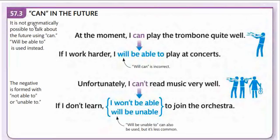The last pointer in today's lesson is 'can' in the future. We have mentioned that we cannot use 'can' in the future — it is not grammatically possible to talk about the future using 'can.' Instead, 'will be able to' is used. For example: 'At the moment I can play the trombone quite well. If I work harder, I will be able to play at concerts.' 'Will be able to' is correct; 'can' is incorrect for future.